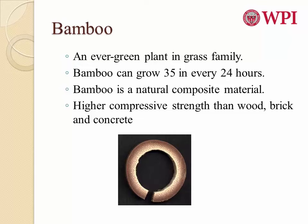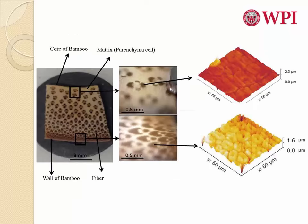Bamboo has higher compressive strengths than wood, brick, and concrete, which makes it a very interesting material. To be able to mimic this material and make a bio-inspired composite material, a better understanding of the micro and nano structure of bamboo is essential.